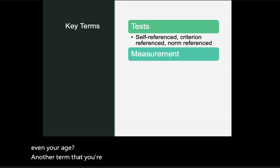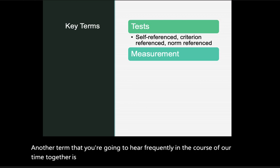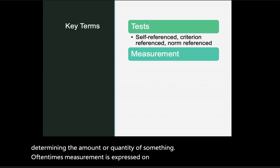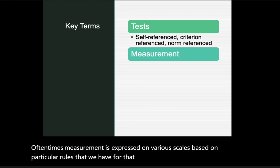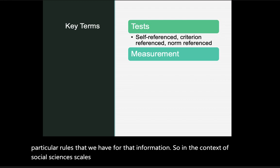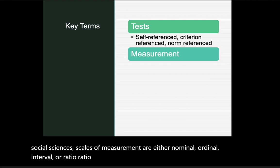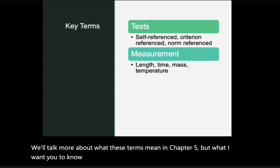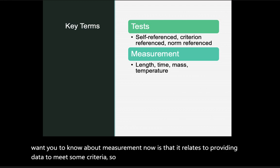Another term you'll hear frequently is measurement. Measurement refers to the process of determining the amount or quantity of something. In the context of social sciences, scales of measurement are either nominal, ordinal, interval, or ratio. Measurement relates to providing data to meet some criteria, and tests are administered to assess the degree to which a criterion is met.